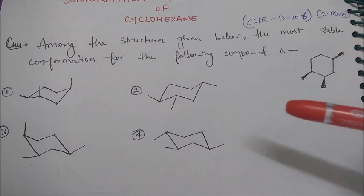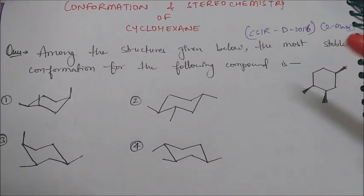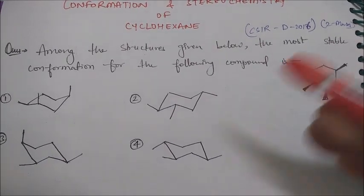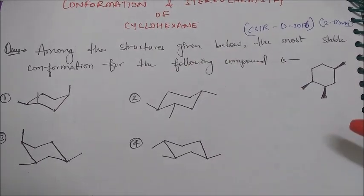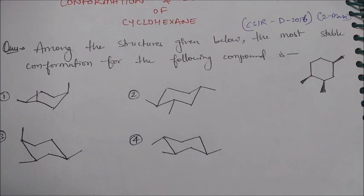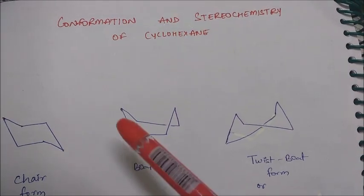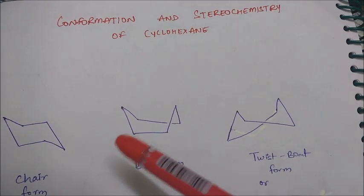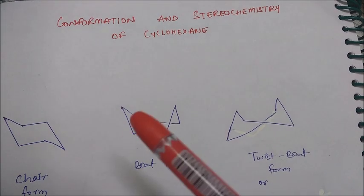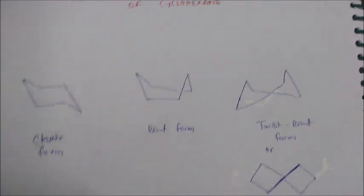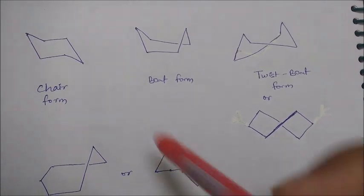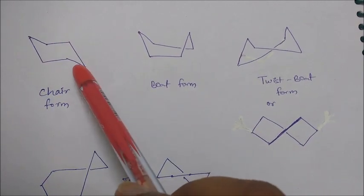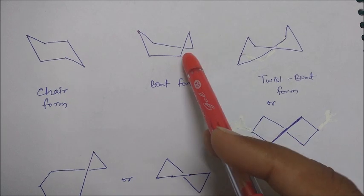We will solve these questions at the end of the video. First we will study what conformation is and how the stereochemistry of cyclohexane works. So let's start with the conformations of cyclohexane. There are a few conformations in which cyclohexane exists. Here I have drawn them: this is the chair form, which looks like this and is the most stable conformation of cyclohexane. Then there is the boat form.